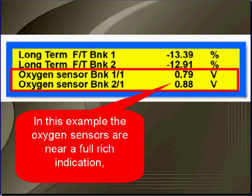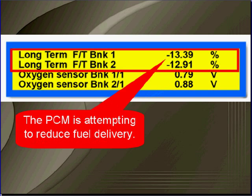In this example, the oxygen sensors are near full rich. The PCM is attempting to reduce fuel delivery.